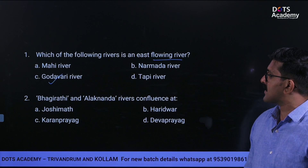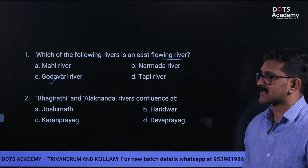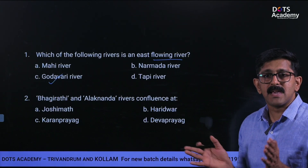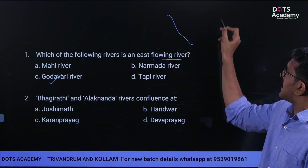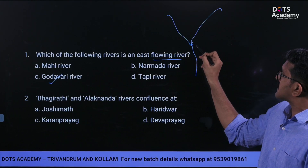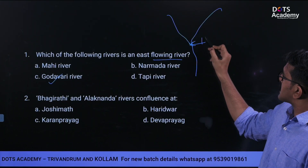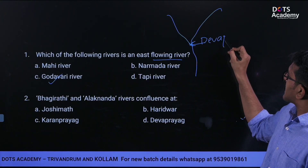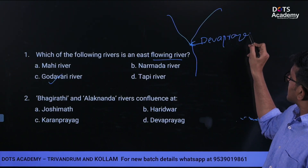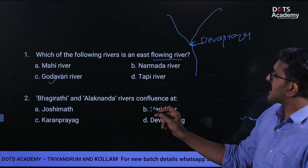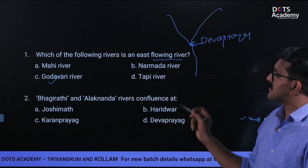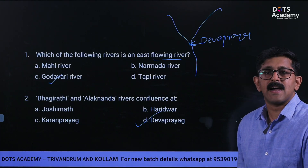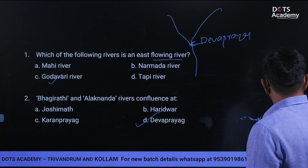Next question: Where do the Bhagirathi and Alaknanda rivers meet? Options: Joshimath, Haridwar, Karna, Devprayag. The Bhagirathi and Alaknanda rivers confluence to form the Ganga river at Devprayag.